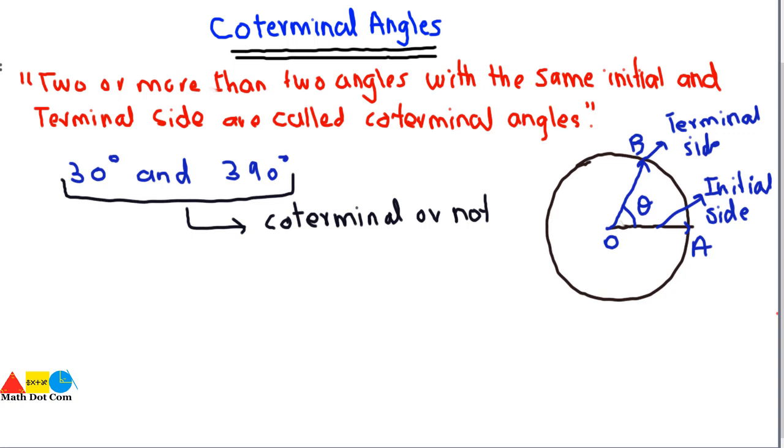If I have 30 degrees and 390 degrees, if I consider this angle as 30 degrees, or you can say if I write here that this is the angle A, O, and B, and this is a 30 degree angle, let's say. And I will ask you to determine whether the 390 degree angle is coterminal with the 30 degree angle or not.